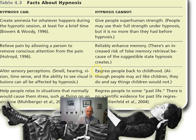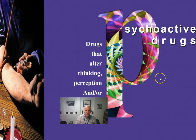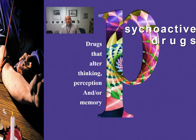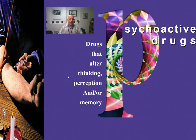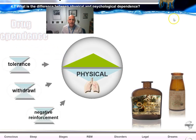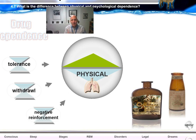Most of you might have taken psychoactive drugs this morning — if you've taken caffeine, you've taken a psychoactive drug. A psychoactive drug is not necessarily illegal; it is a drug that alters thinking, perception, and memory. Some psychoactive drugs are illegal, though cocaine and opium used to be legal at one point. You know a drug is causing physical addiction or dependence when you need more of the substance than you used to in order to get the same level of high — that is drug tolerance.